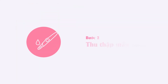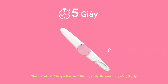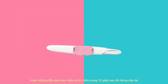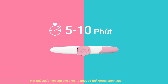Second, obtain a urine sample. Remove the cap from the test strip and place the absorbent tip under your urine stream for 5 seconds, or dip the test strip in your collected urine sample for 15 seconds. Replace the cap. Lay the test strip on a flat surface and wait for 5 to 10 minutes. Results after 10 minutes may not be accurate.